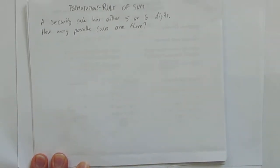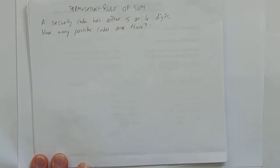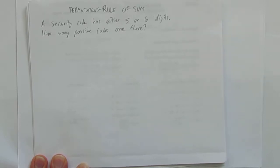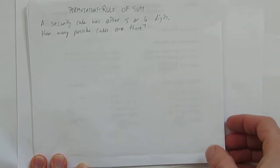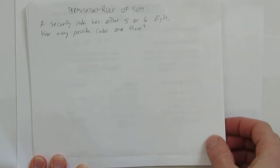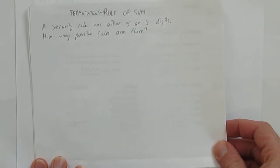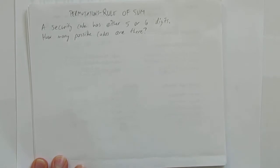In this video, we'll look at permutations, and in particular, we'll look at the rule of sum. So the question is: a security code has either five or six digits — how many possible codes are there?